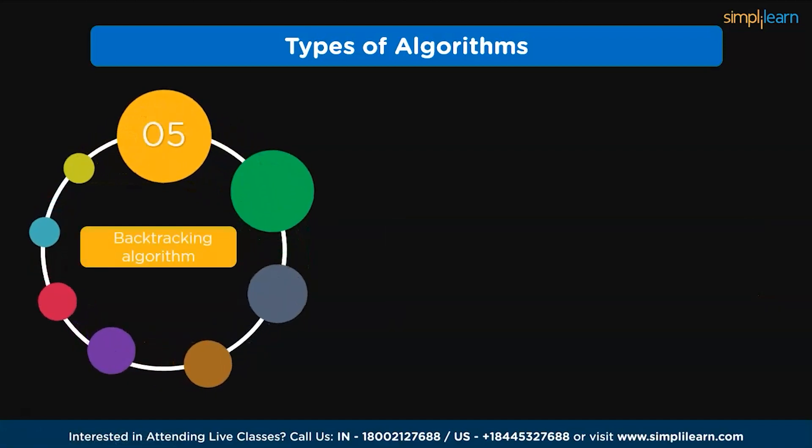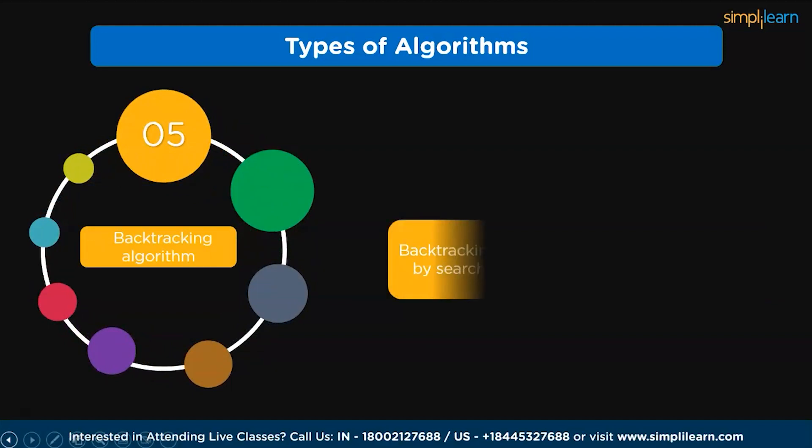Then, we have backtracking algorithm. Backtracking algorithm constructs solutions by searching through all possible solutions. When a solution fails, we go back to the point of failure and build on the next solution, repeating the process until we find the best solution.